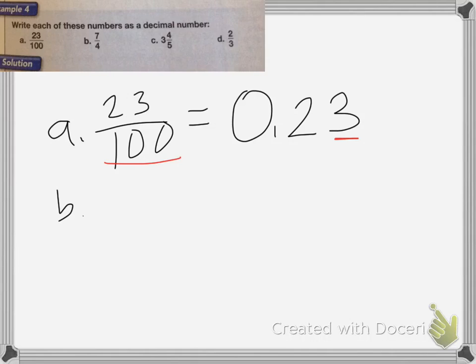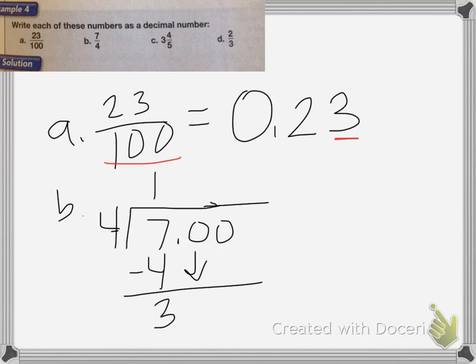For B, 7 fourths, this is going to be greater than 1, so I'm going to still divide 7 divided by 4, and I'm going to add a decimal and a couple of zeros. 4 goes into 7 once, that's 4, subtract 3, bring down the 0.